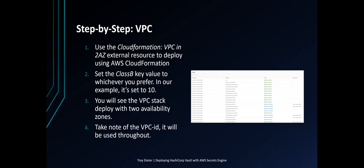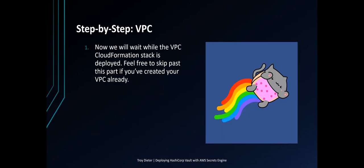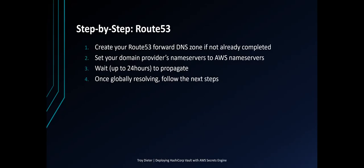To deploy using AWS CloudFormation, you'll want to set the class B value to whichever you prefer — in our example it's set to 10. You will see the VPC stack deploy with two availability zones. Take note of that VPC ID, as it will be used throughout. We'll wait while the VPC CloudFormation stack is deployed. Feel free to skip past this part if you've already created your VPC for this project.